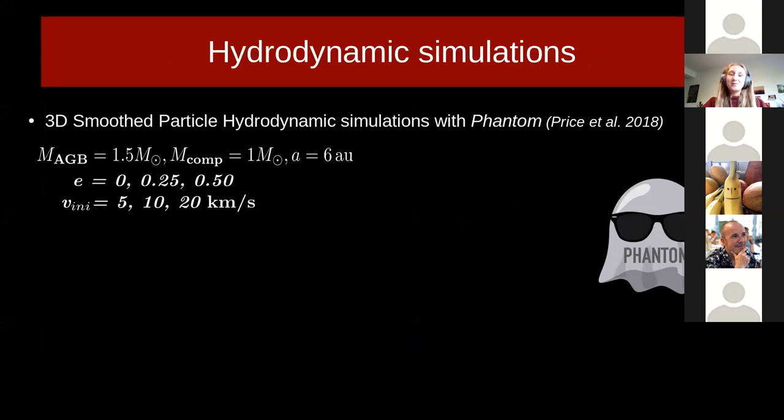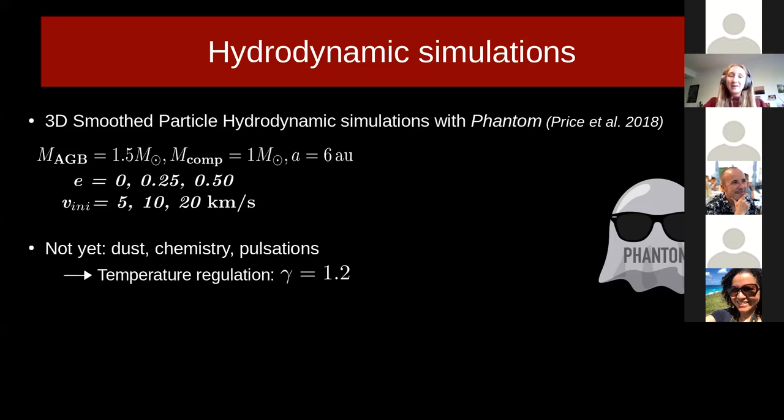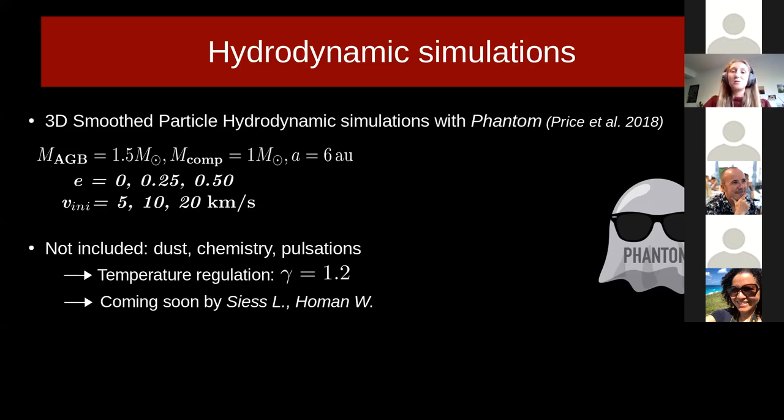To do this, we used 3D simulations with the smoothed particle hydrodynamics code Phantom of an AGB star with a solar mass companion at the semi-major axis of 6 astronomical units with varying eccentricity and varying AGB wind velocity. As Silke also already told you, these are purely hydrodynamic models without the inclusion of dust, chemistry, and pulsations, and the cooling is regulated by the equation of state with polytropic index gamma = 1.2 in between the adiabatic and isothermal regime. But in future work, the impact of these aspects will also be studied as they are currently being implemented into Phantom by our colleagues, Lionel Siess and Zwart-Hohmann at the ULB.